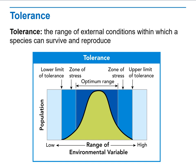Tolerance — when we talk about tolerance, especially in a biological graph, it is the range of external conditions within which a species can survive and reproduce.